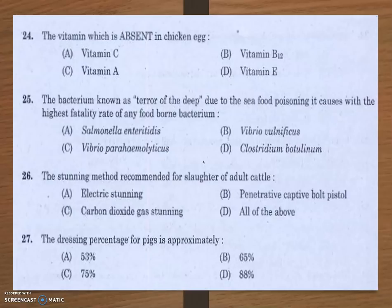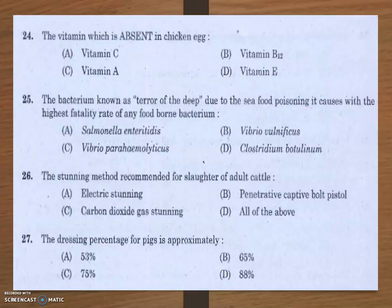Next question: the stunning method recommended for slaughter of adult cattle. The options are electric stunning, penetrative captive bolt pistol, carbon dioxide gas stunning, and all of the above. The answer is penetrative captive bolt pistol — this method is recommended for slaughter of adult cattle.